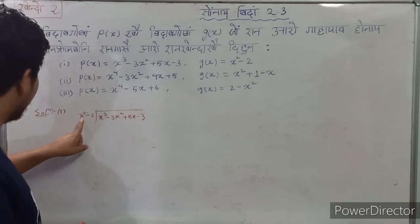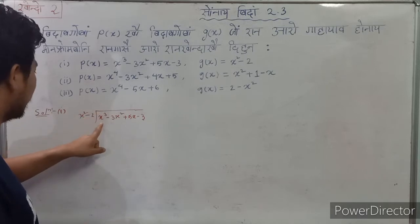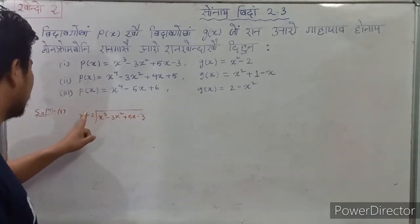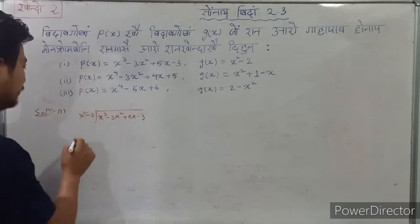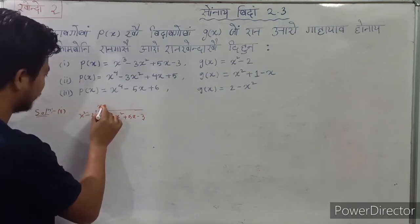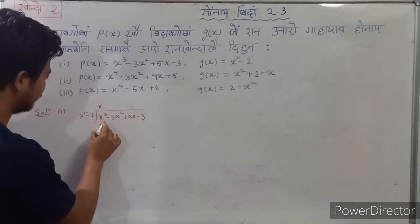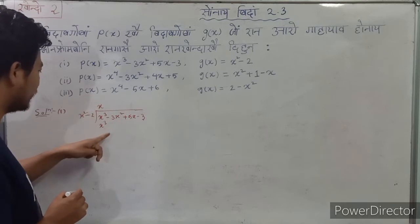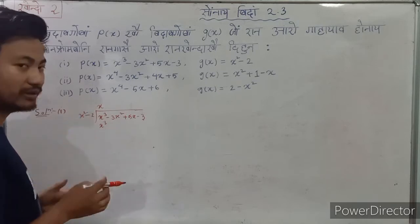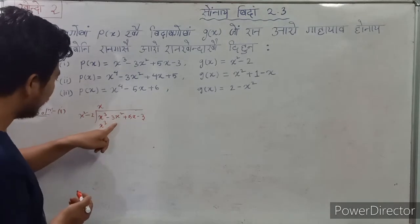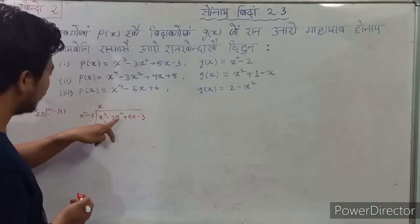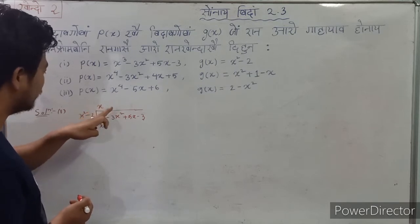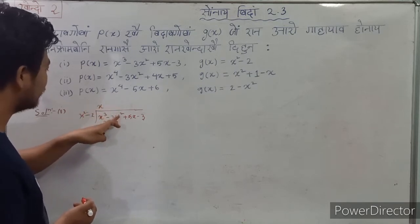So x squared is equal to x cubed. Therefore we have minus 2. So x cubed is equal to 0. Here we see 2x cubed is equal to x. Now x is equal to x squared.